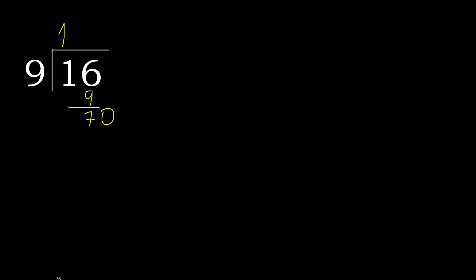That is not a number, therefore complete — always complete with 0 here. Point. 0 point. 70. 9 multiplied by 8 is greater. Multiply by 7: 63 is not greater. 70 minus 63 is 7.